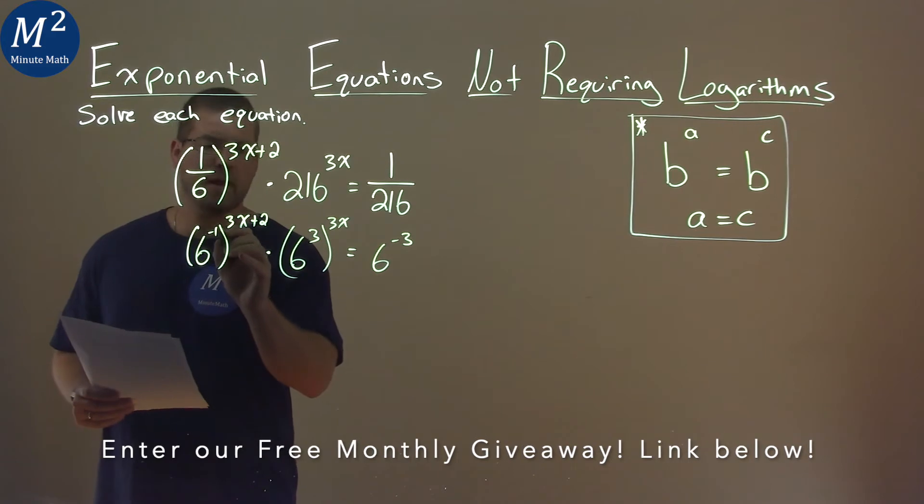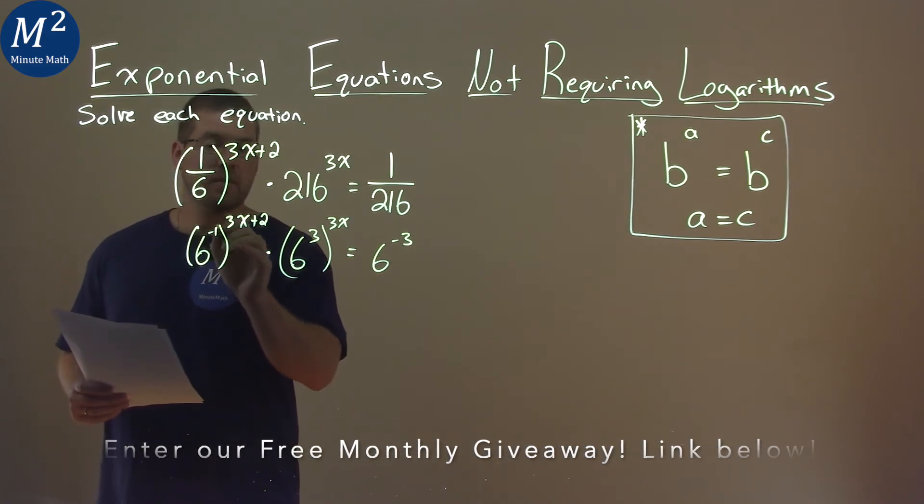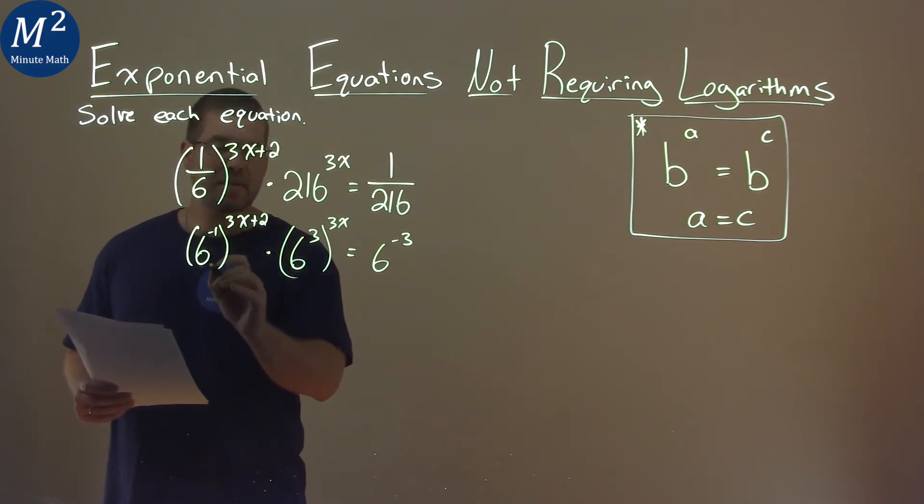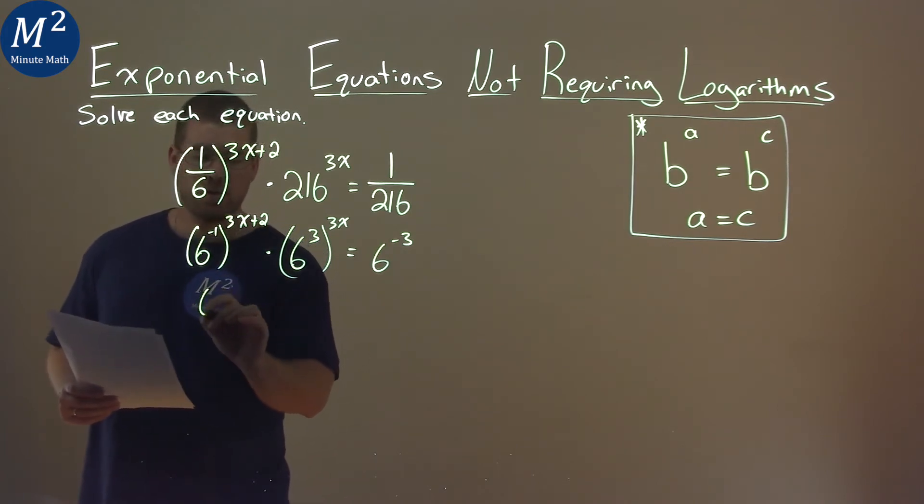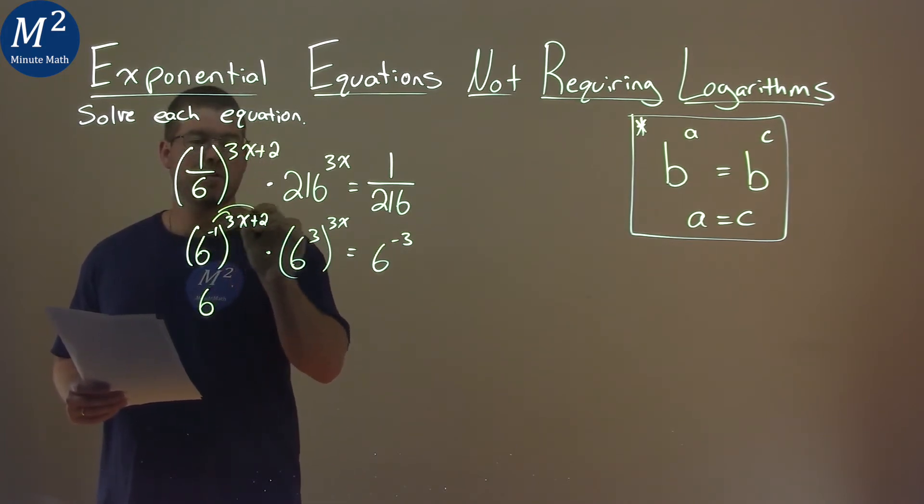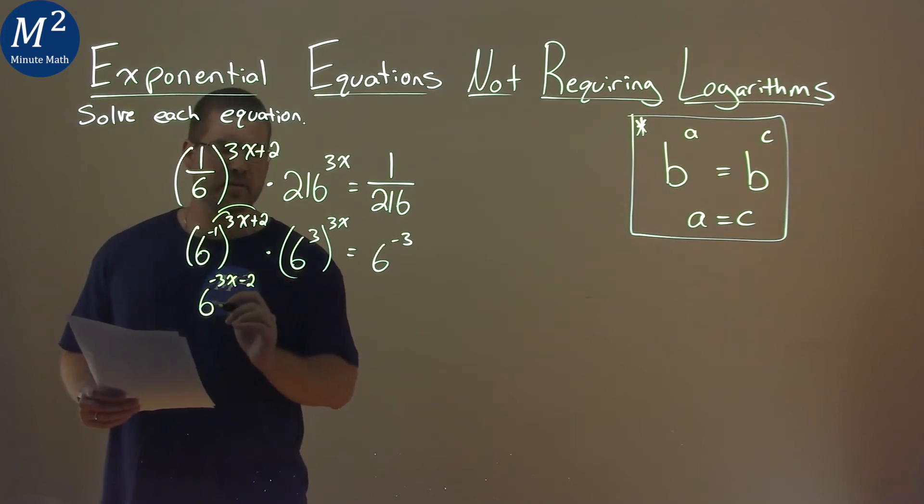Our rules of exponents say when we have something raised to an exponent and then raise it again, we can keep that same base, which is 6 here, and multiply the exponents. So we have 6 here to the, let's distribute, multiply that negative 1. Negative 1 times 3x is a negative 3x, and negative 1 times 2 is negative 2 or minus 2.